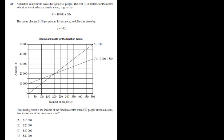The next one, question 20, a function center hosts events for up to 500 people that cost C in dollars for the center to cost an event where x is given by C is equal to 10,000 plus 50x. Basically, this is a similar question to the 2010 paper, where we have two equations. We have the point of intersection, which is solving simultaneously. But the question says, how much greater is the income of the function center when 500 people attend an event?